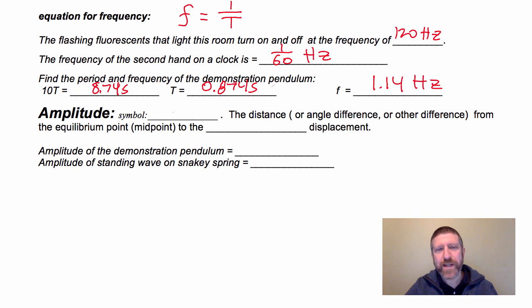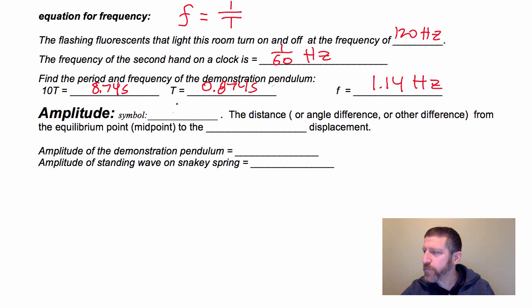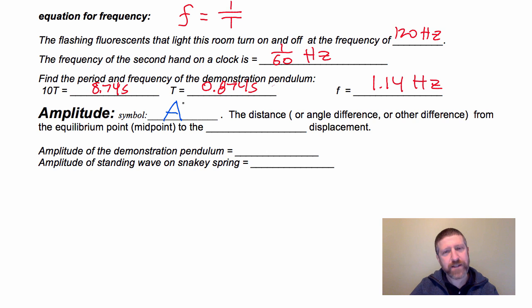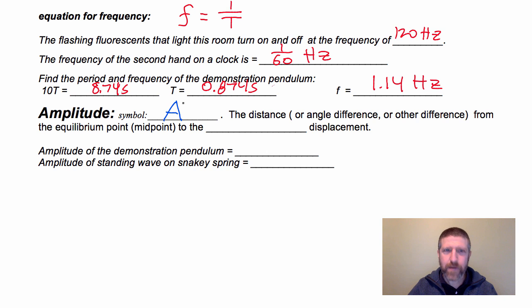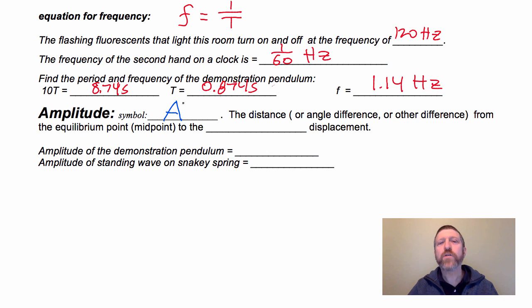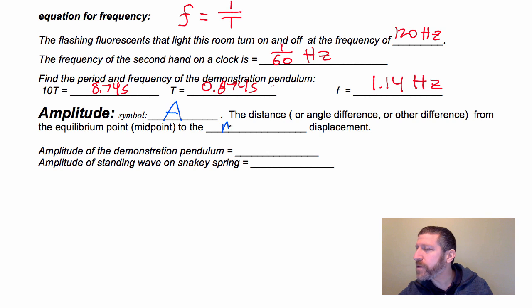A few other terms we need to know. One term is amplitude — the symbol for that is capital A. Amplitude is the distance, angle difference, or some other difference from the equilibrium point, which is very often the midpoint, to the maximum displacement.